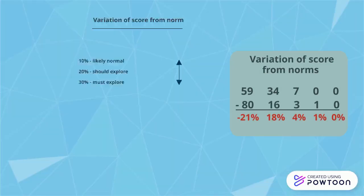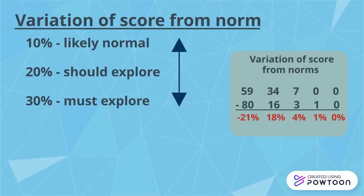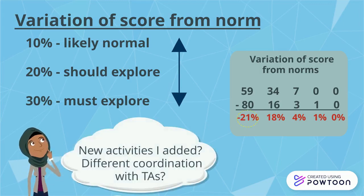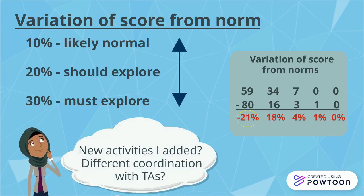Use this heuristic to help determine if there's anything you should investigate more deeply. If you discover something that greatly varies from the norms, think about the class context and note your initial thoughts about what may have contributed to that variation.